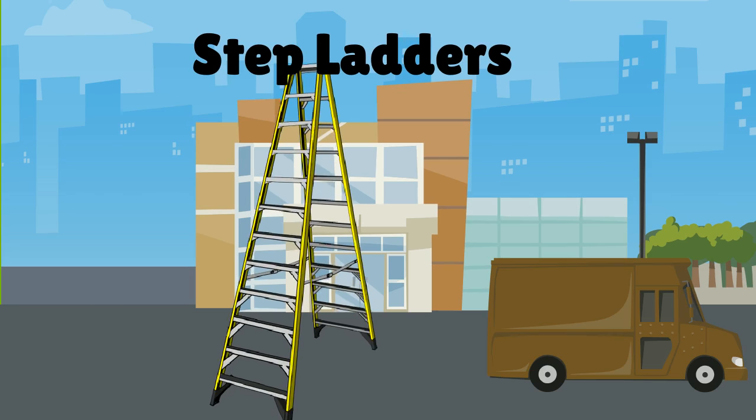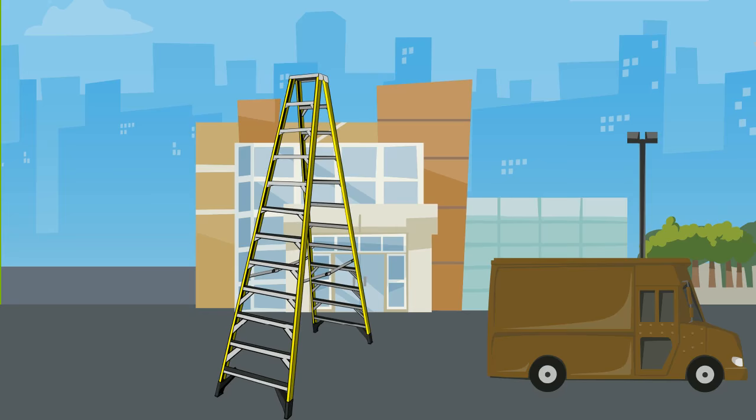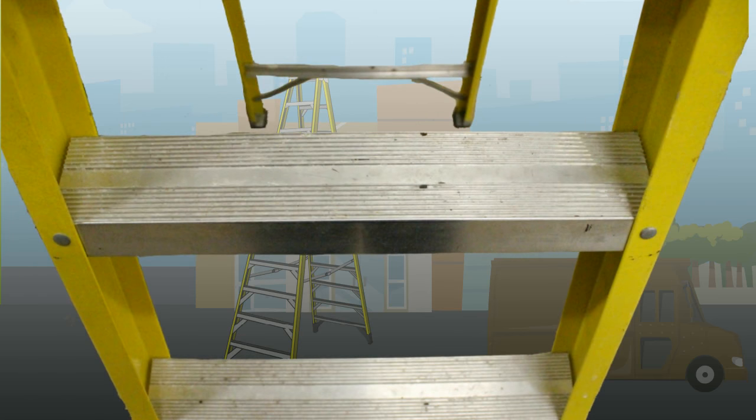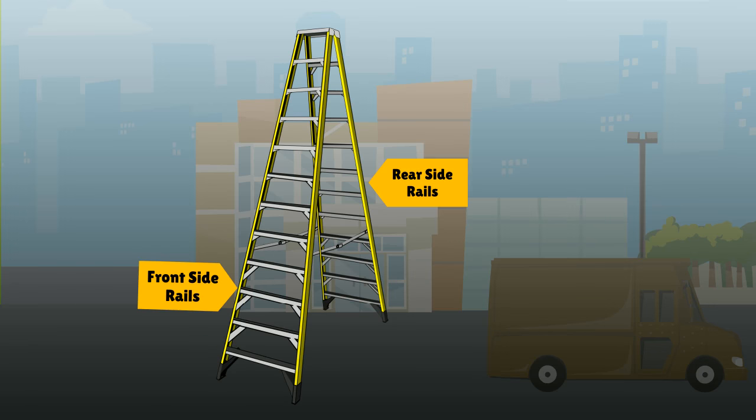Step Ladders. A step ladder is constructed with wide, flat steps and two pairs of rails connected by a hinge at the top and that opens at the bottom so it can be freestanding without being attached to or supported by something else.